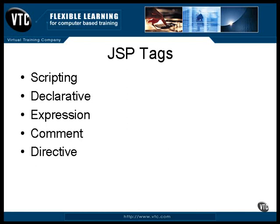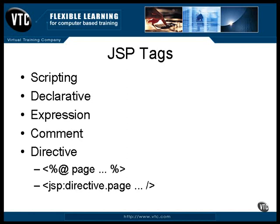A final category is the directive category. There are a number of different kinds of directives, and each directive requires a keyword. The most common directive keyword is 'page', and it looks like this. There are a number of attributes that can be set for the page, and it also has an XML format. One directive that comes in handy is the include directive — the file you name can be the path name of any file, and it will be included just as if it had been cut and pasted into the JSP file at that point.